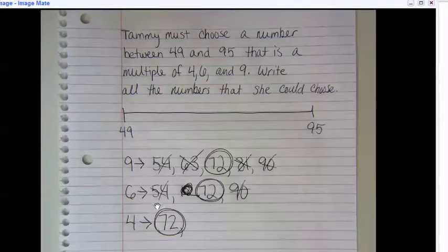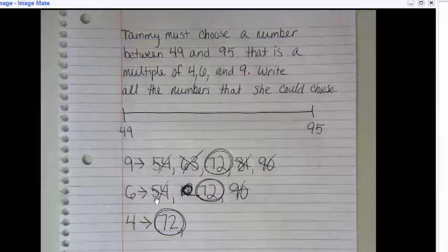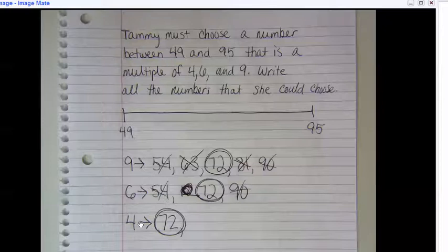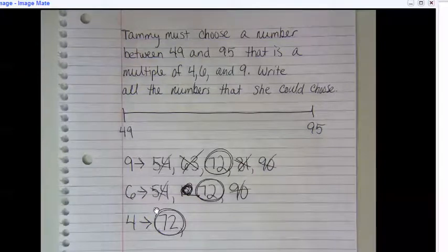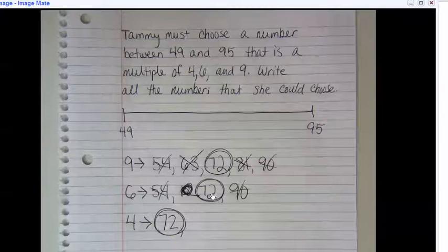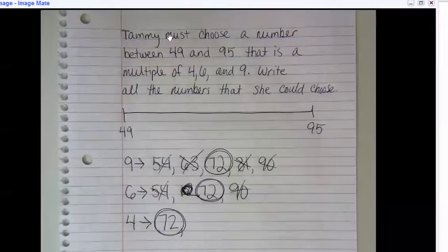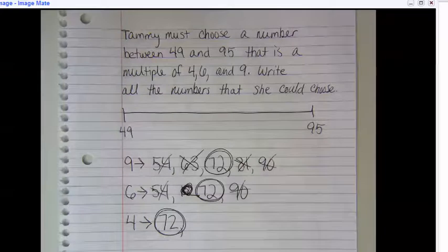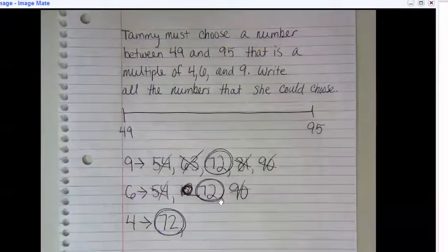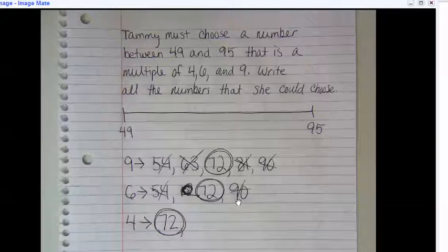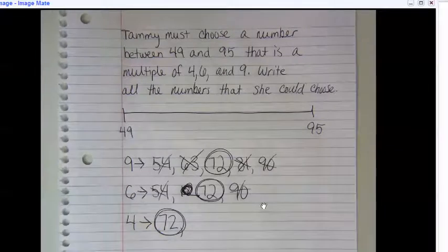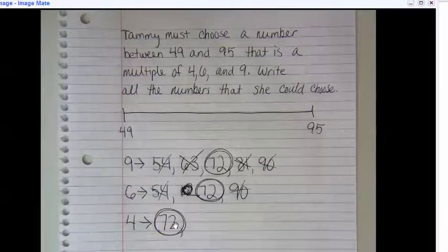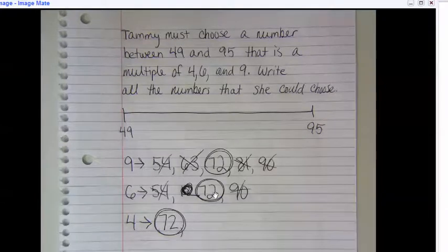And then for four, I had to ask myself: is 54 divided by four a whole number or decimal? Well, 54 divided by four gave me a decimal, so then I crossed off 54 from the sixth row and 54 from the nine row. Then I tried 72. 72 divided by four is 18, so that works. And last I tried 90 divided by four, which gave me a decimal, so that didn't work, so then I crossed off 90. The only number that worked, the only multiple of nine, six, and four that worked for all three of them was 72.